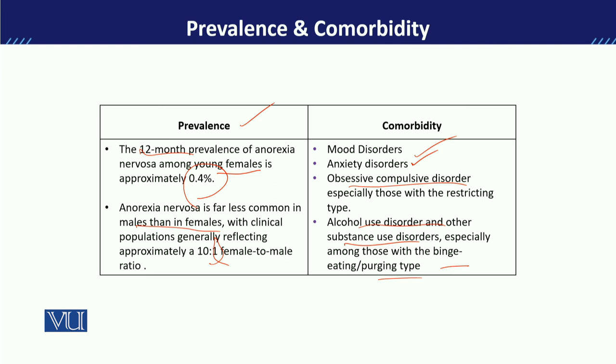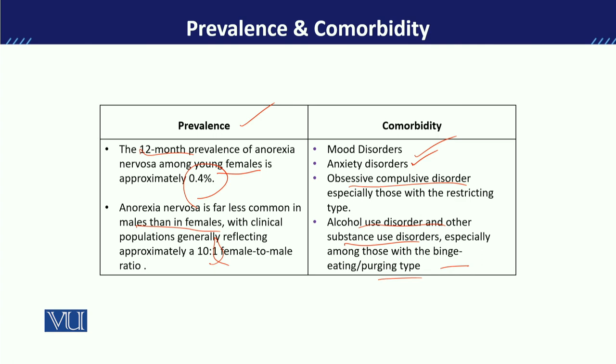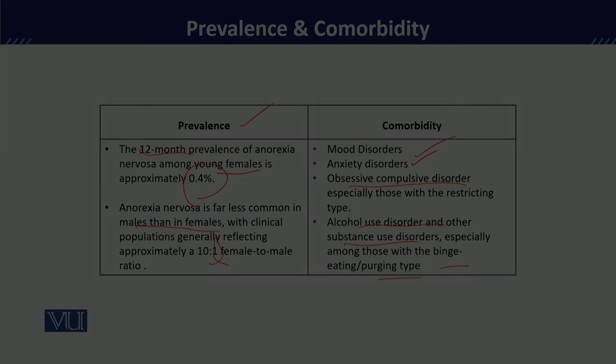Mostly teenagers are experimenting with different things, so it is possible that if someone is dealing with Anorexia Nervosa, they may also start using some substance. In this form, we will need to give a dual diagnosis. Co-morbidity always means that in addition to this disorder, another disorder can also exist — which means we move towards dual diagnosis.